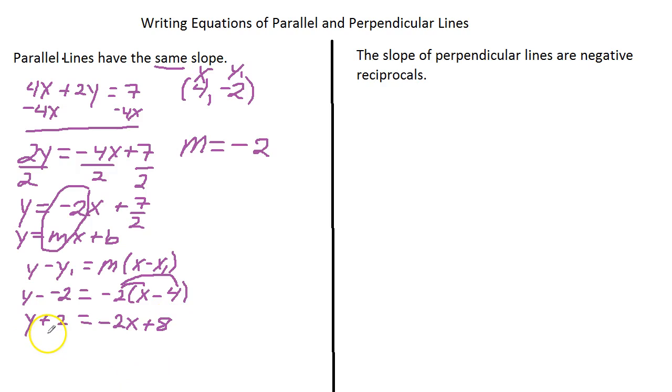Now we're going to move this because we're going to put this in slope intercept form. So I'm going to subtract 2 from each side. And we have y equals negative 2x plus 6. There is our parallel line.